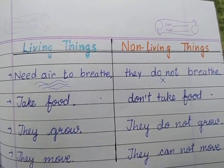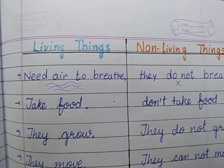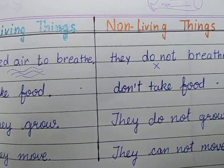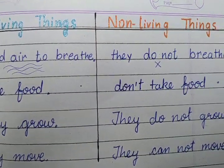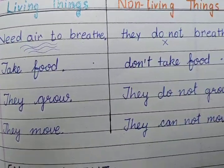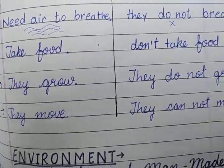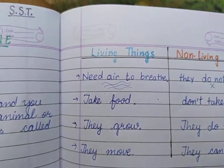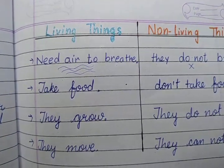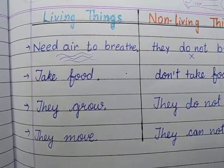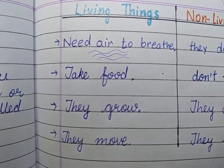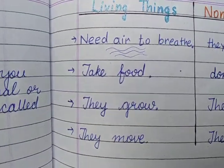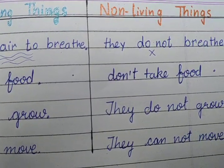Living things need air to breathe, like we need air to breathe — non-living things cannot breathe. Living things take food, and non-living things cannot take food. Living things can grow; non-living things do not grow. They move, non-living things cannot move. So there are four main properties of living things: they breathe, they take food, they grow, and they move.